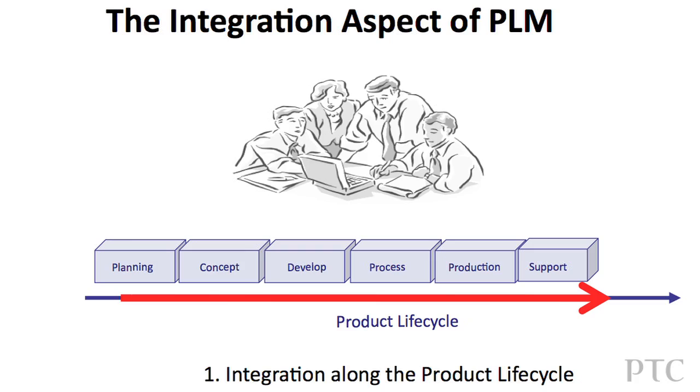When we think about the three axis coordinate system, we have axis one: the product lifecycle process. We start from requirement management, functional management, conceptual bill of material or product structure, engineering bill of material, manufacturing bill of material, maintenance bill of material, and at the end, recycling. That is one axis — a very important axis. The name product lifecycle management shows product lifecycle as a very important component.